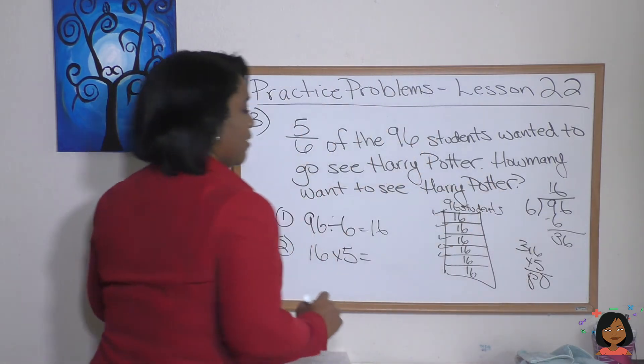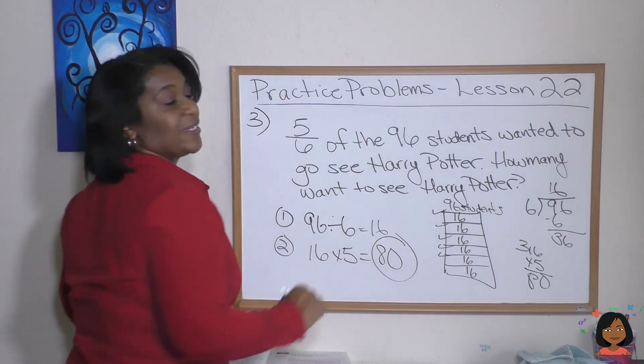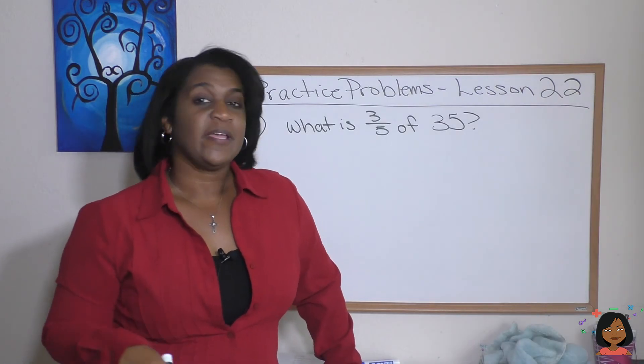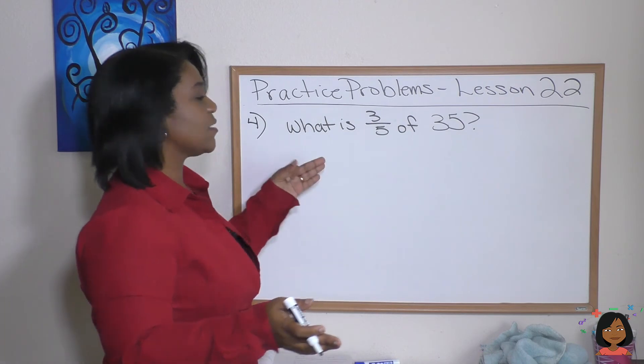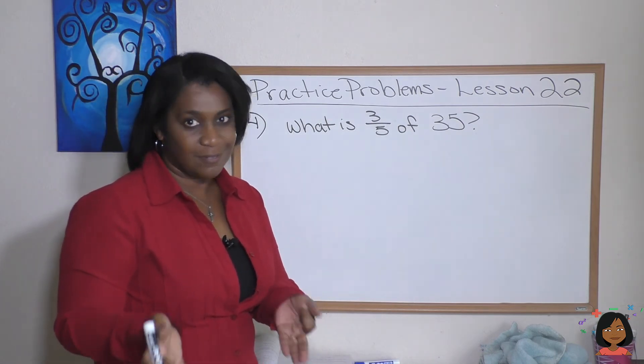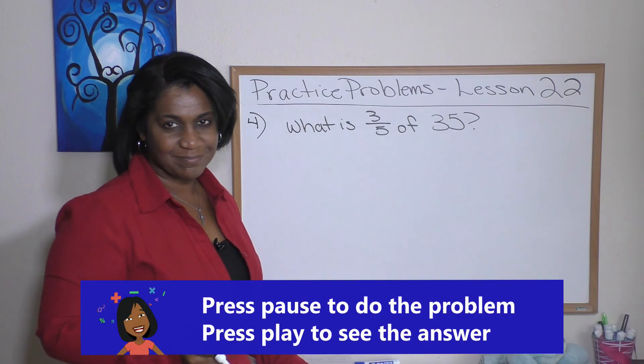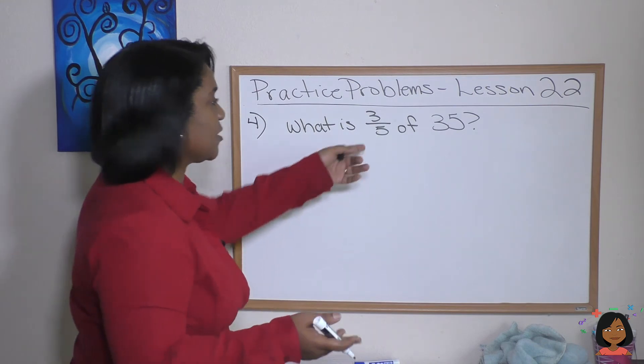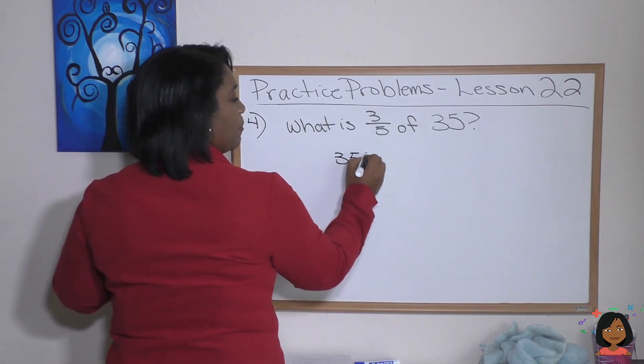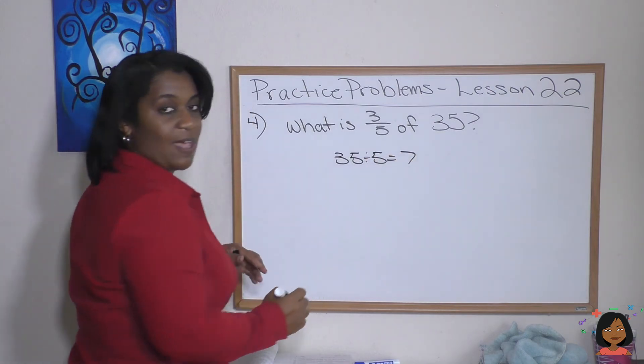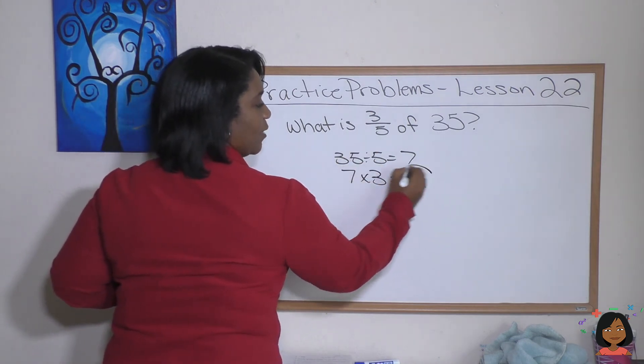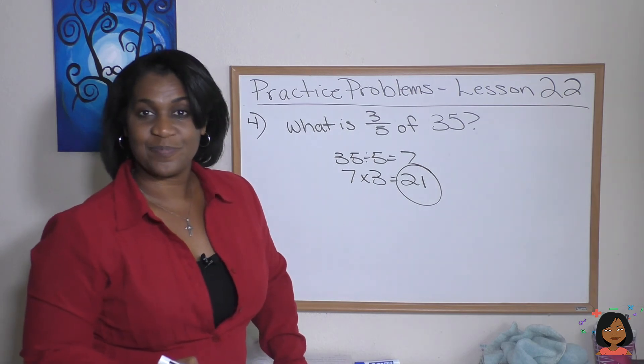Problem four. Here, no fancy word problems, we're going with straight numbers. What is three fifths of 35? You got this. Now just because we don't have a fancy word problem doesn't mean we don't do it the same exact way. So the thing we're going to do is step one is divide 35 by 5, which gives me 7. Now I'm going to multiply my 7 times how many I've highlighted, which is 21. 21 is your answer.